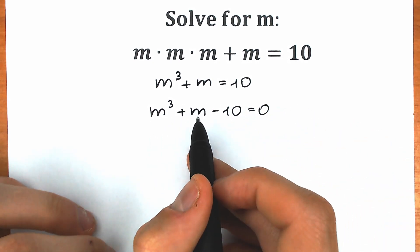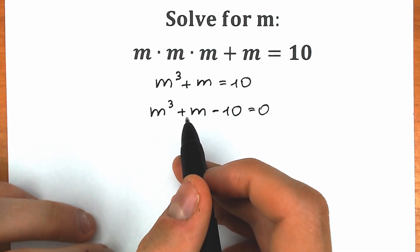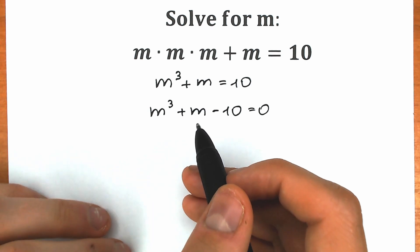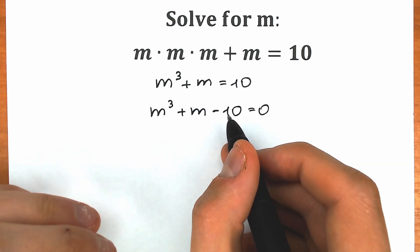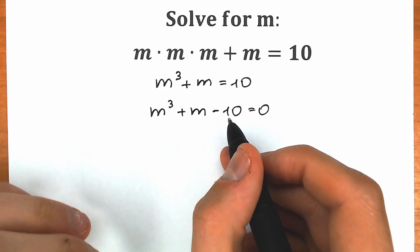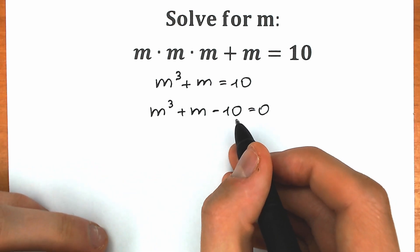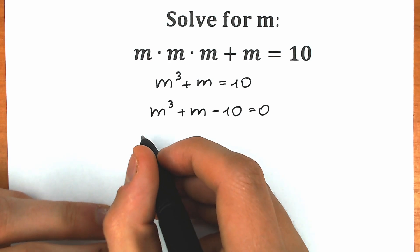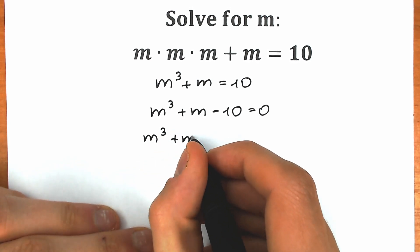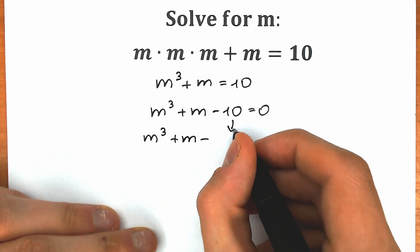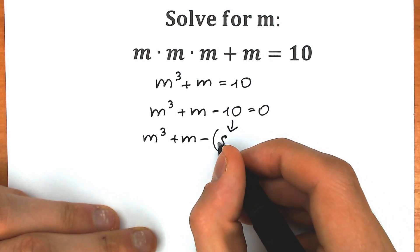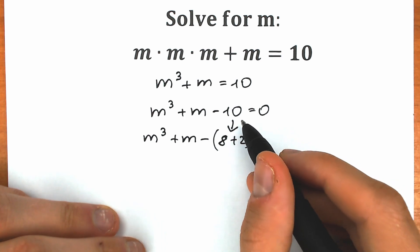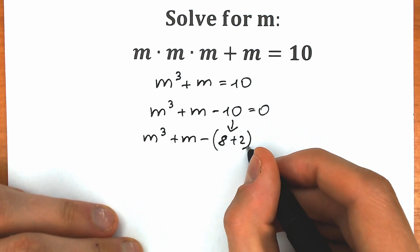We have the third power and the first power, so this is our cubic equation. There are a lot of ways to solve this cubic equation, but I'm going to show you this one. First of all, this 10 can be written as 8 plus 2. Why 8 plus 2? Because 8 is a great number — we can write it as 2 cubed, and 2 is great because we can write it as 2 to the first power. There are other ways like 6 plus 4 or 9 plus 1, but the best way is 8 plus 2.